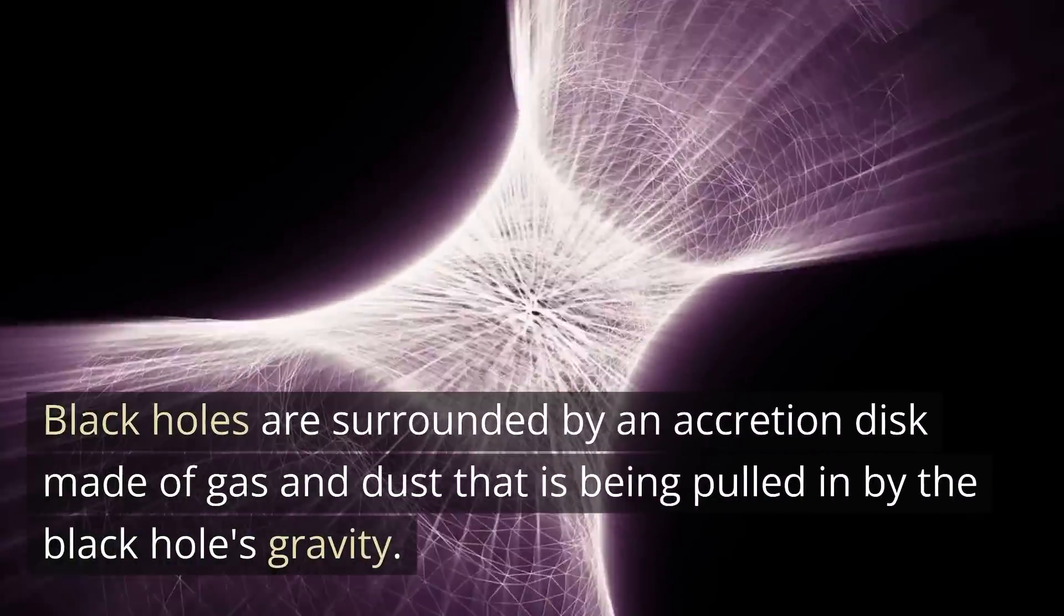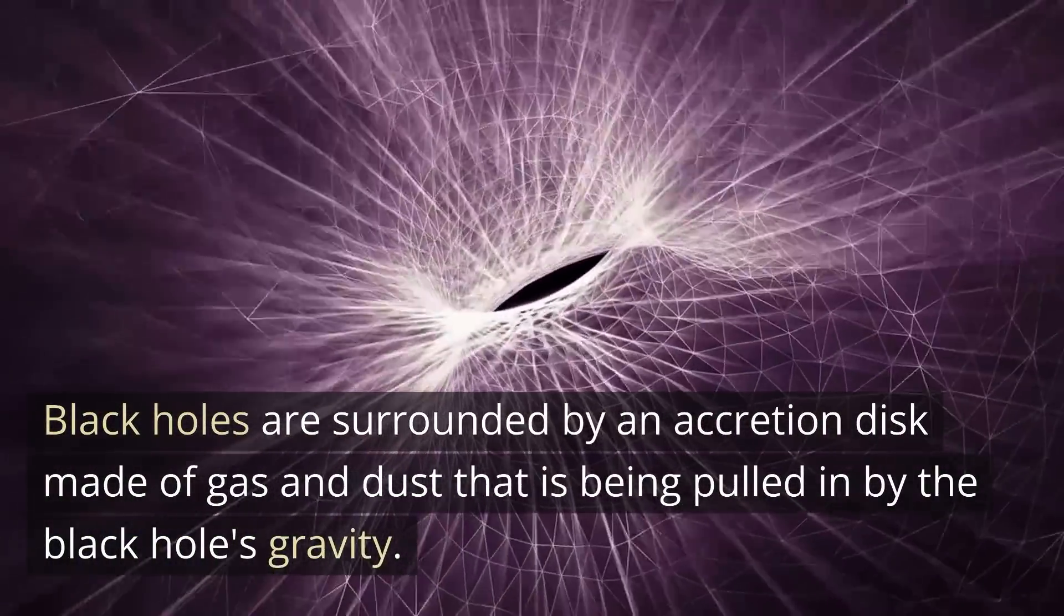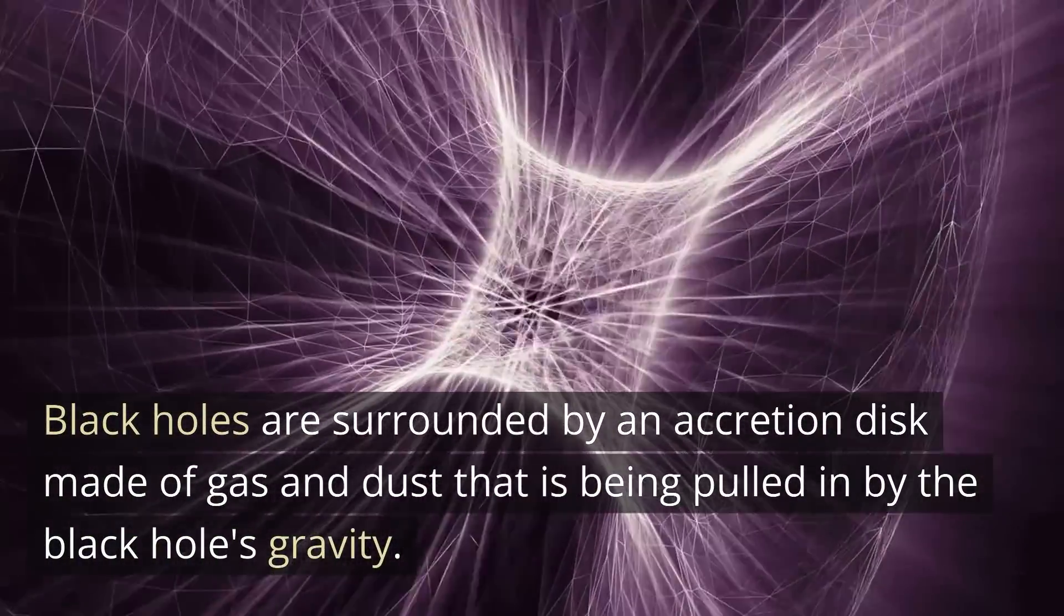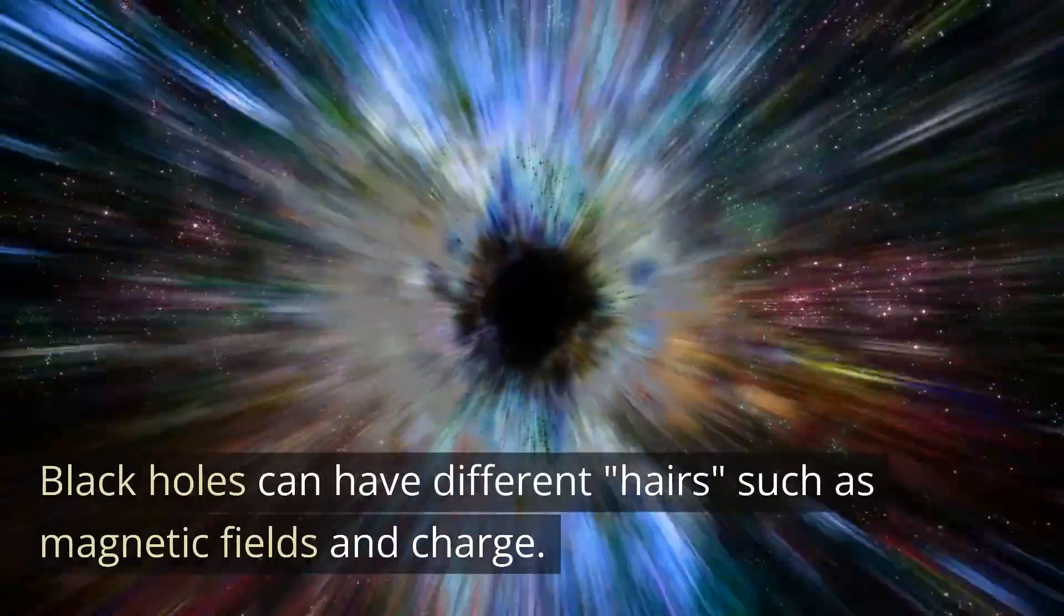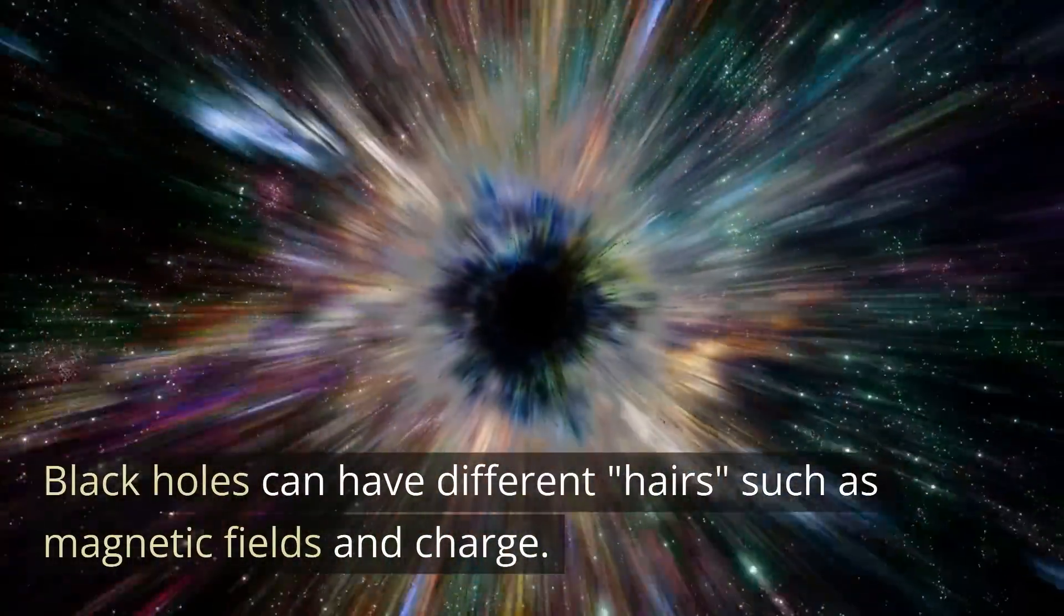Black holes are surrounded by an accretion disk made of gas and dust that is being pulled in by the black hole's gravity. Black holes can have different properties such as magnetic fields and charge.